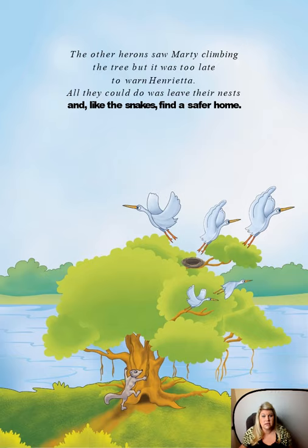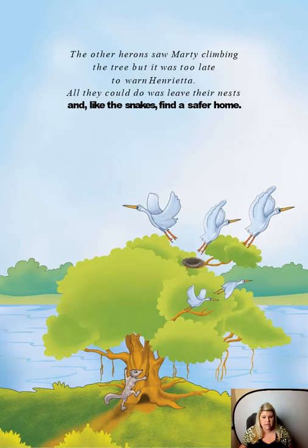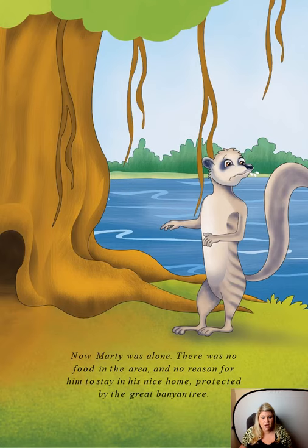The other herons saw Marty climbing the tree, but it was too late to warn Henrietta. All they could do was leave their nests and, like the snakes, find a safer home. Look — there's Marty the mongoose climbing the tree to get to the herons. The herons — the birds — are flying away to find other places. Now Marty was alone. There was no food in the area and no reason for him to stay in his nice home protected by the great banyan tree. He's sad — he doesn't have any friends or food.